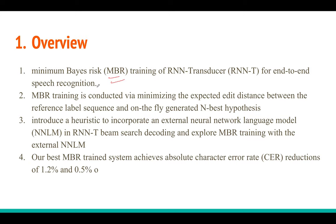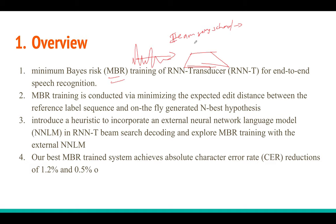As in Daniel Povey's original MBR paper, the idea is that along with minimizing the cross-entropy loss, you also minimize the expected distance — a string edit distance — between the reference sequence and the generated hypotheses. For example, let's say your audio signal contains the sentence 'I am going to school' — that is your reference. The model, which could be a simple RNN Transducer, will give you multiple hypotheses: hypothesis 1, hypothesis 2, and so on up to hypothesis N, based on your beam size.